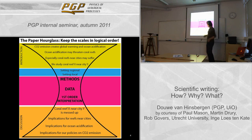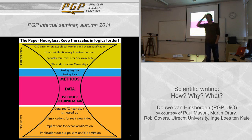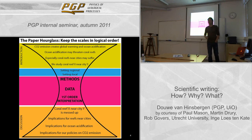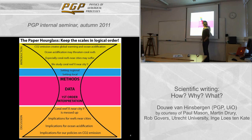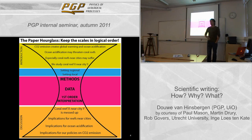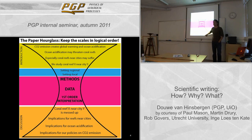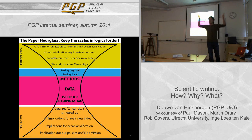If the bottom of the hourglass is much narrower than the introduction, and you promised the reader something about global warming, but in the end all you're telling them is there's some reef in Australia — that's not why they read the paper. Conversely, if you start with a very small top and then suddenly in the discussion you're telling me we have to change CO2 policy, that's arm-waving. So make sure the scale at which you start is the scale at which you end, and do everything gradually.